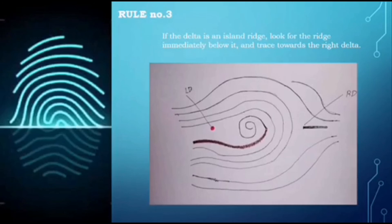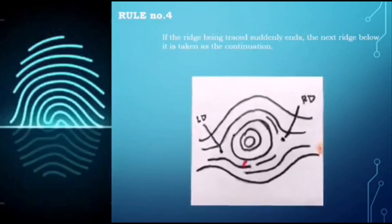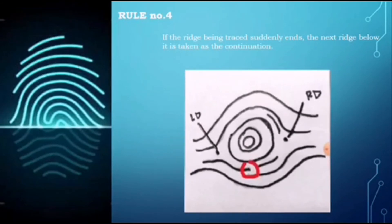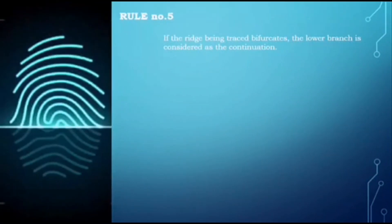Rule number four: if the ridge being traced suddenly ends, the next ridge below it is taken as the continuation. This is where the ridge being traced ends — we trace here, and according to rule four, the next ridge below is taken as the continuation. We trace below it until we reach the right delta.